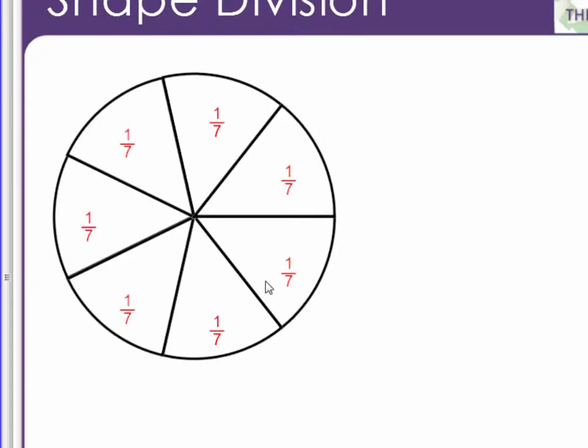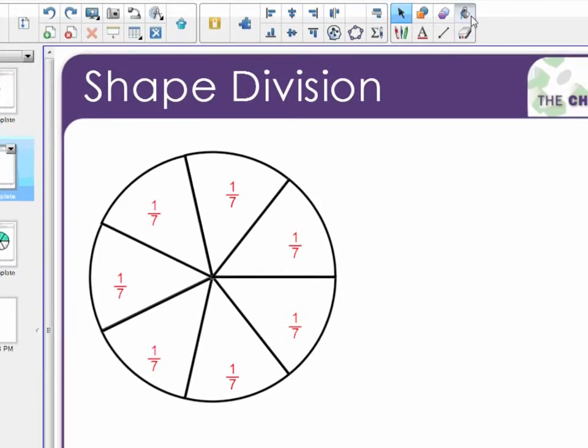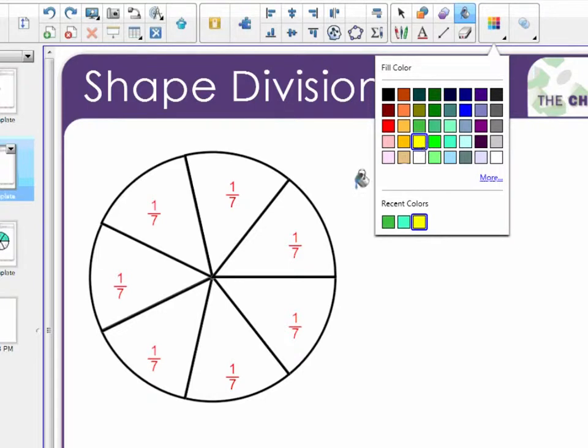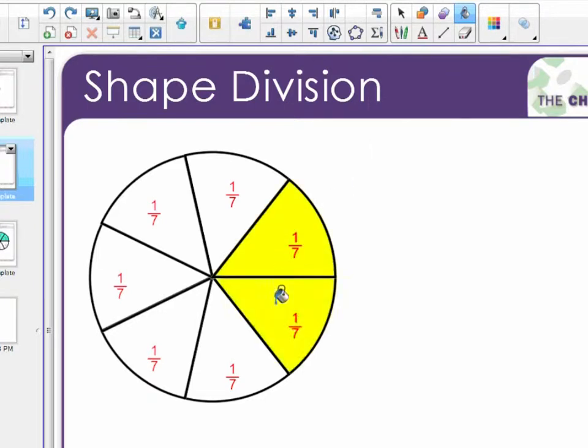There are two things I can do with these sections once I've divided the shape. The first is I can come up to the fill tool, select a color, and then I can fill individual sections of the shape using the fill tool.